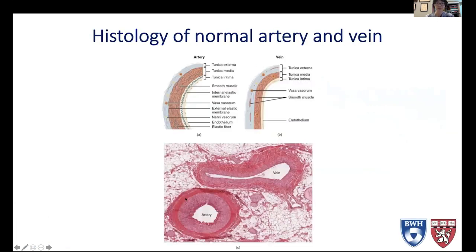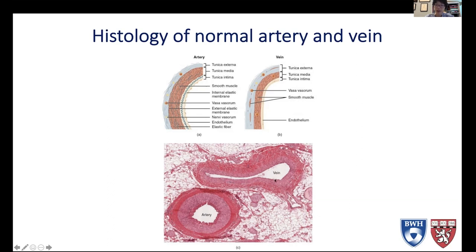To understand the histopathology of AVMs, let's review some histology of normal arteries and veins. An artery and a vein both have three layers — noting that these pictures are of peripheral arteries, as intracranial arteries are slightly different. You have the intima, made of endothelial cells; the internal elastic lamina; the media, which has smooth muscle cells; and the adventitia, which has fibroblasts, nerve cells, and vasa vasorum. In a vein, the smooth muscle cell layer is thinner and there's no internal elastic lamina. The external elastic lamina is only present extracranially.